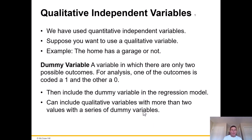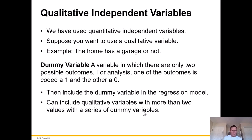Just a quick mention of qualitative, non-numerical independent variables. We've used quantitative independent variables, which is usually the case for regression. But what if you wanted to use a qualitative variable? For example: does the home have a garage or not? We would use a dummy variable — a variable in which there are only two possible outcomes. For analysis, one outcome is coded a one and the other is a zero: one means you have a garage, zero means you don't. We can then include that dummy variable in the regression model.